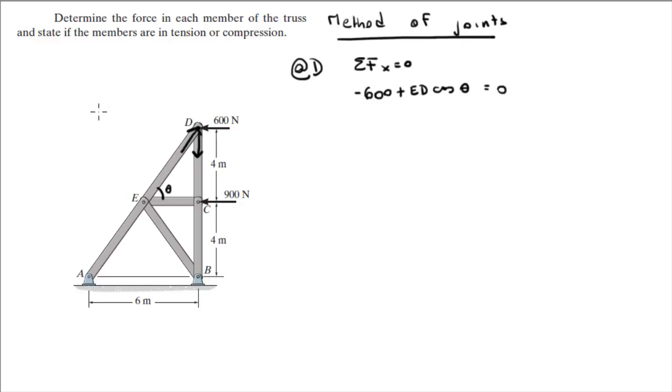Now what is theta? Theta, which is the same theta right here, is easily found by doing the opposite over the adjacent of the triangle, and you do the tangent inverse. So theta is the tangent inverse of the opposite, which is 8, 4 plus 4, over 6, so it's 8 over 6, and that comes out to be 53.1 degrees.